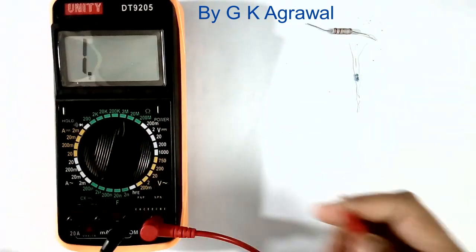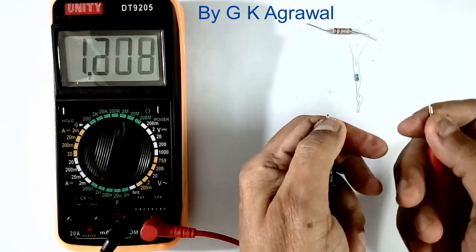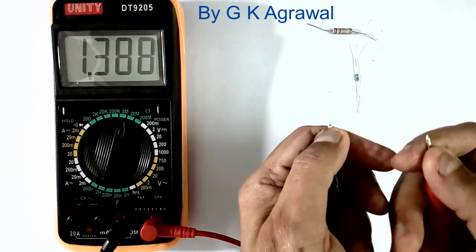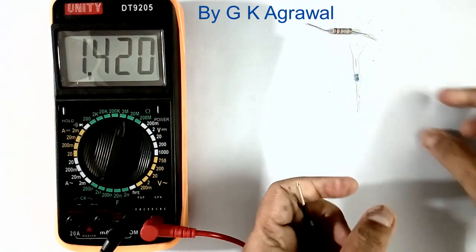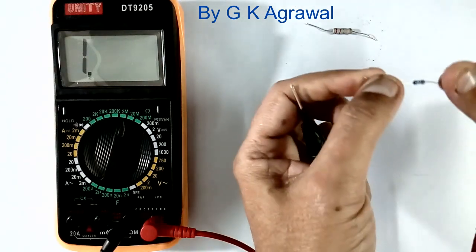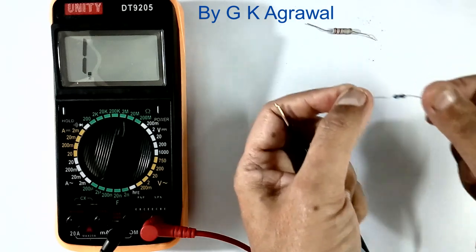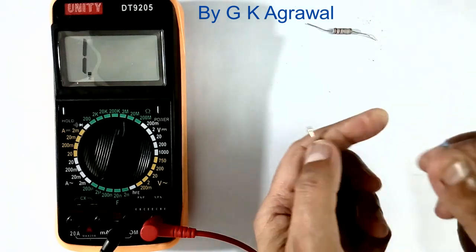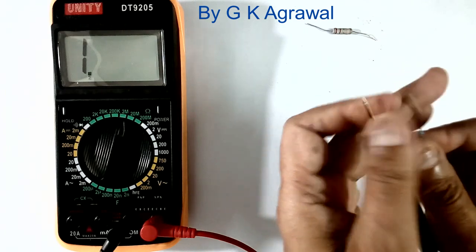Here 2 mega ohms setting I will keep. So this body resistance, which is about 1 mega ohm, it will come in parallel of 2 mega ohms. So it will measure parallel resistance. To measure this resistance properly of high value...